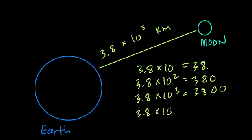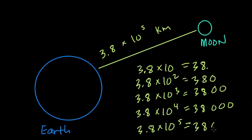And 3.8 times 10 to the 4th would give you 38 and then 3 zeros. And then lastly, 3.8 times 10 to the 5th would give you a 3 and an 8 and then 4 zeros.